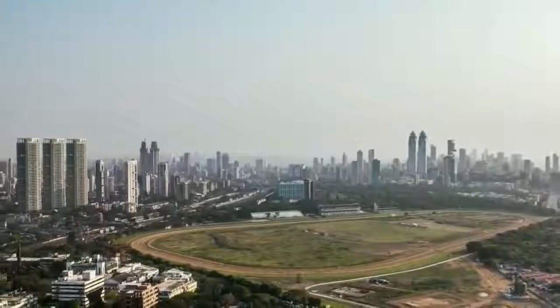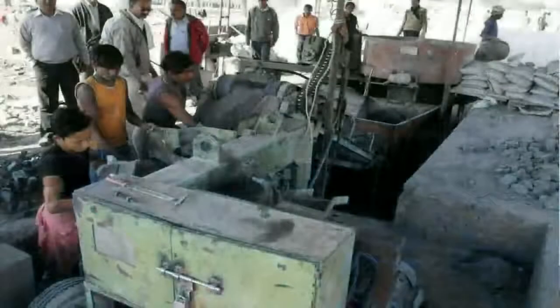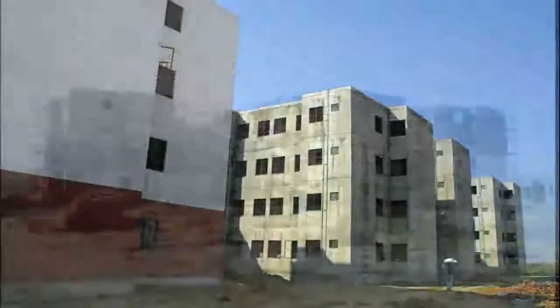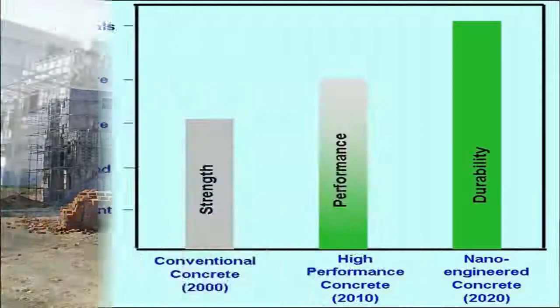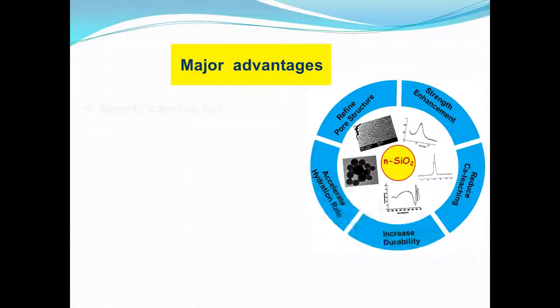Rapid urbanization is a global phenomenon. However, this urbanization has to be achieved in a sustainable manner. Nanotechnology can be gainfully applied in cementitious material to address the issue of durability and sustainability.